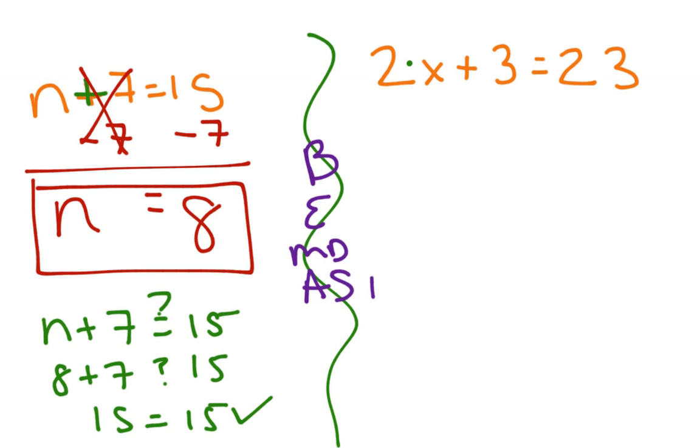But to undo it, we generally go backwards through the order of operations to undo those steps and using the inverse. So the first thing we would want to do is this plus 3 by undoing it with a minus 3. So minus 3 on both sides of the equation and that would leave 2x equals 20.